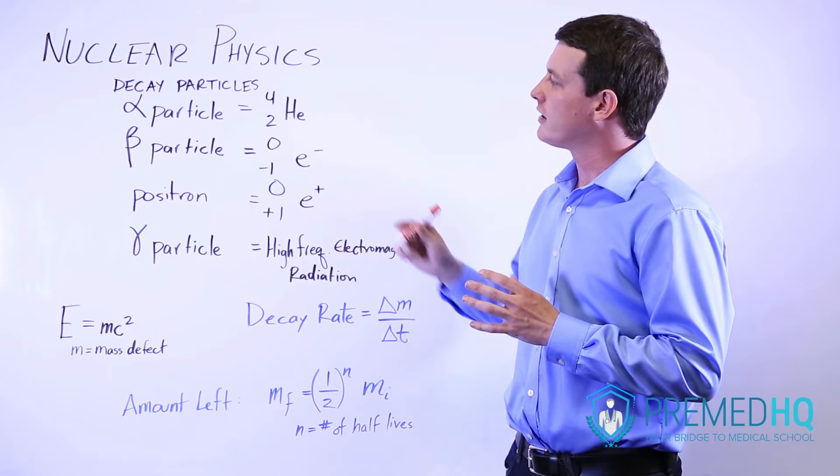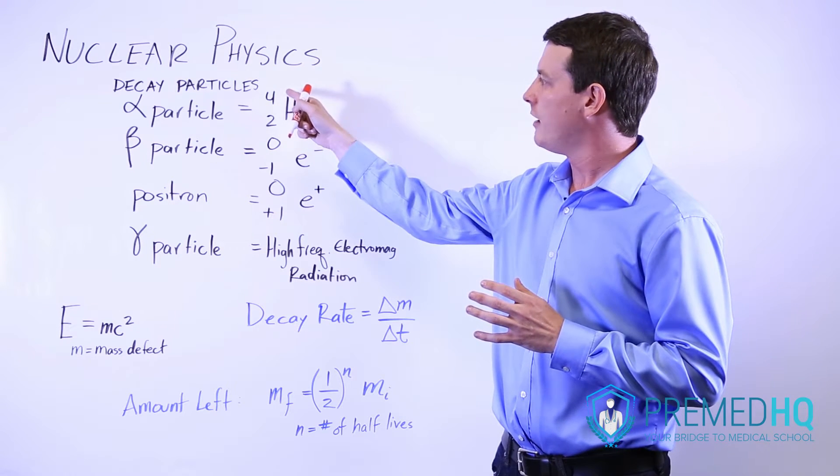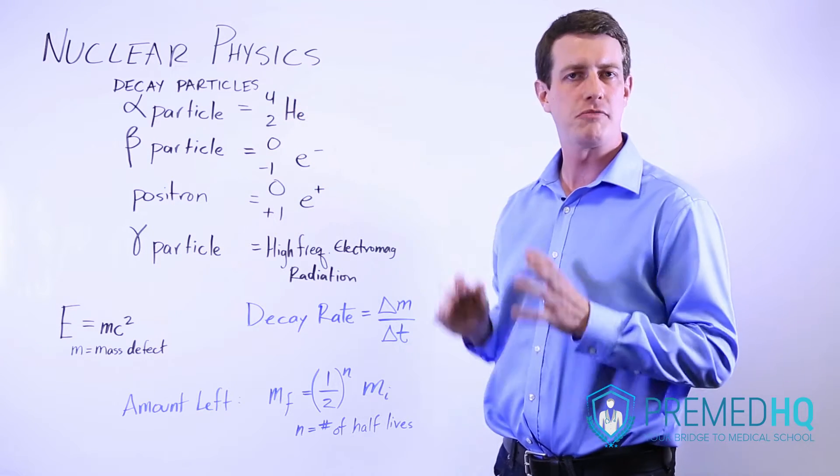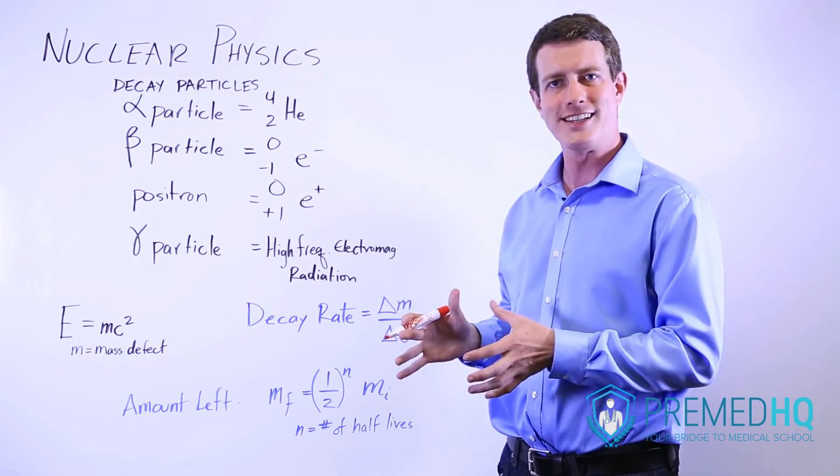The decay particles are the alpha particle, which has a mass of four and a charge of positive two, and so it looks a lot like a helium nucleus.